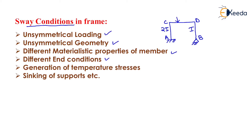The fourth condition is different end conditions. Depending on the types of supports provided on the frame, the frame will have a tendency to undergo a sway mechanism. In this diagram, support A is fixed and support B is hinged; due to the hinge support at B, the frame will undergo sway in the rightward direction. The fifth condition is generation of temperature stresses, which causes the frame to tend to move in a particular direction.